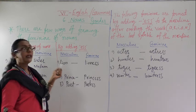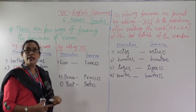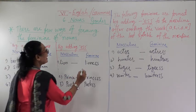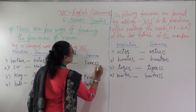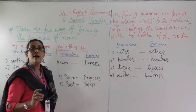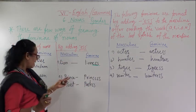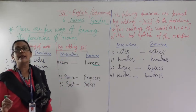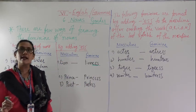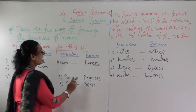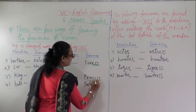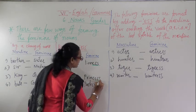Another example: Prince — P-R-I-N-C-E is in the masculine. By adding double-S, we get P-R-I-N-C-E-S-S — Princess. So Prince becomes Princess by adding -ess.